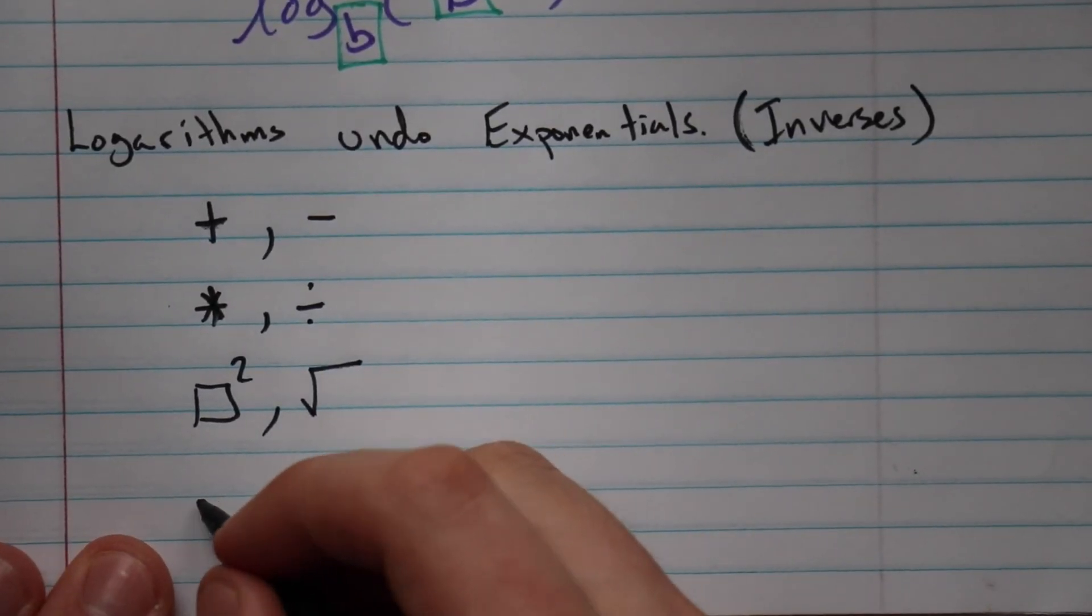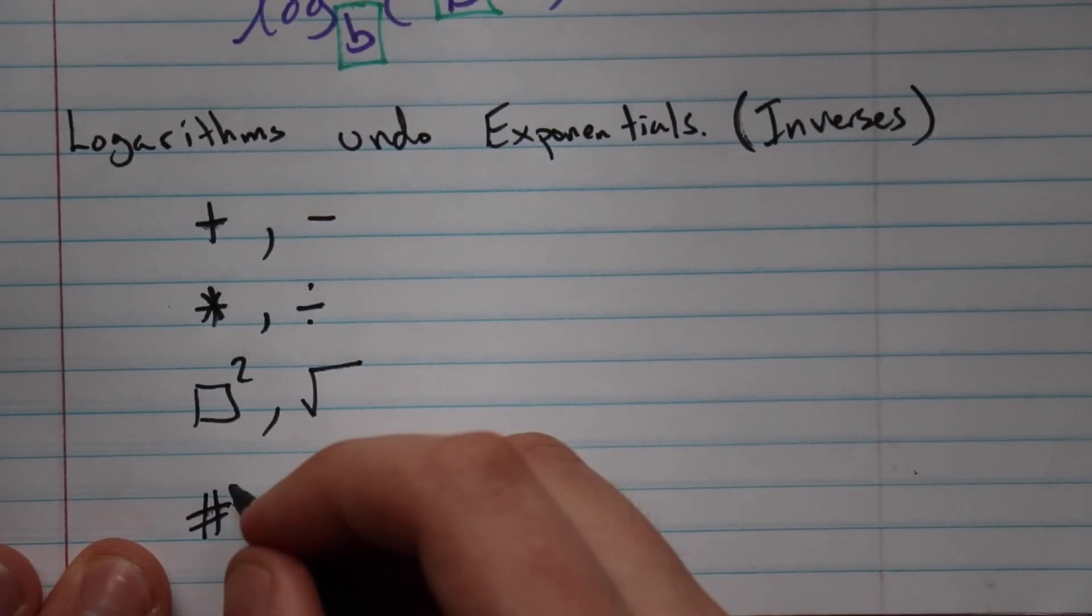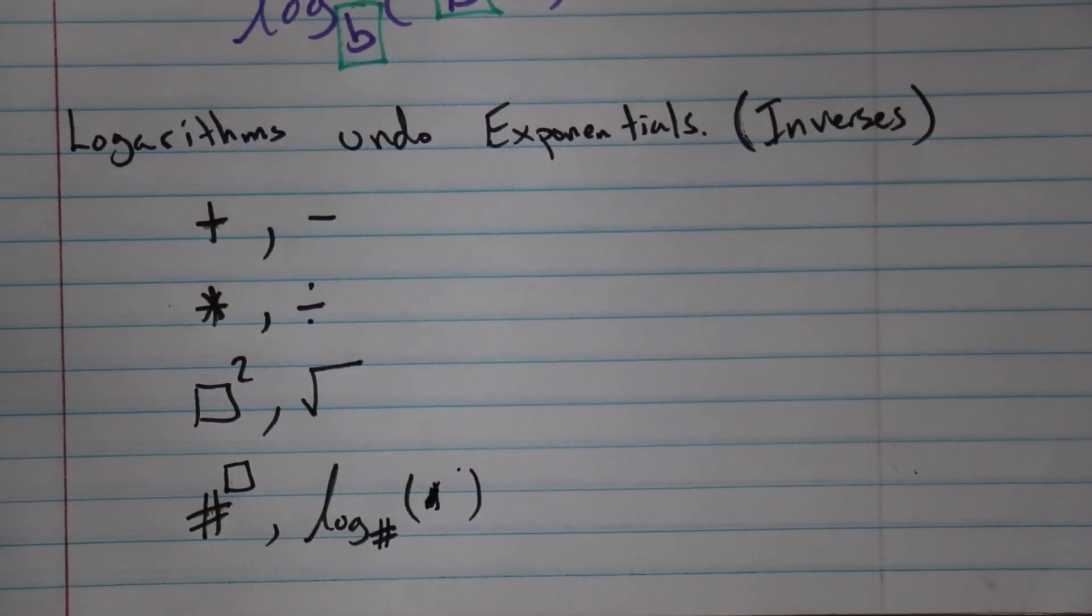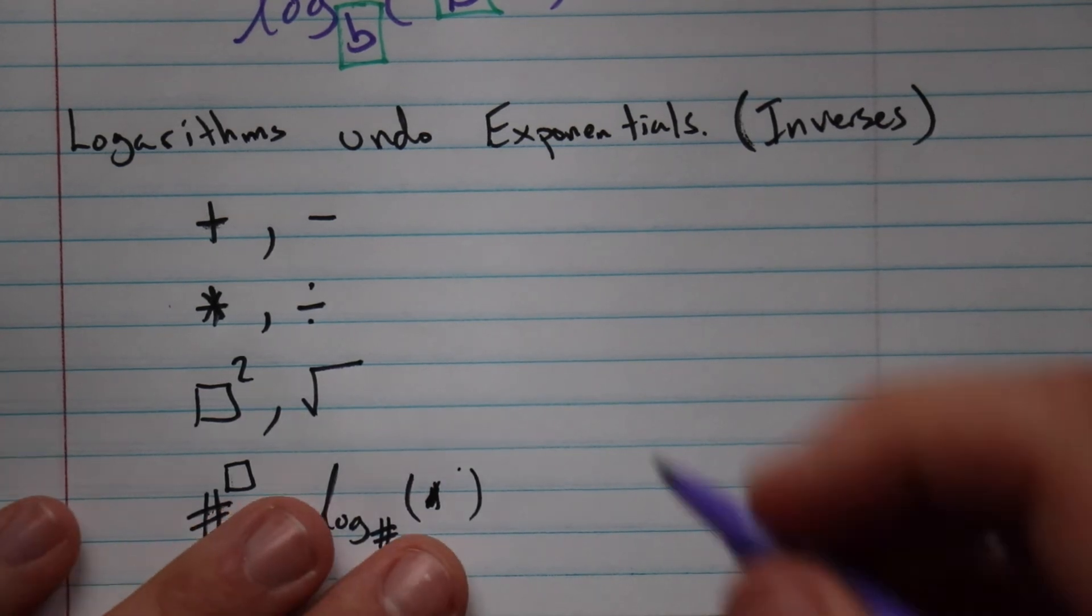Yeah, so logarithms and exponentials undo each other. I hope this was helpful. Feel free to look back at some of those other examples. If you need some practice, here's a few more.